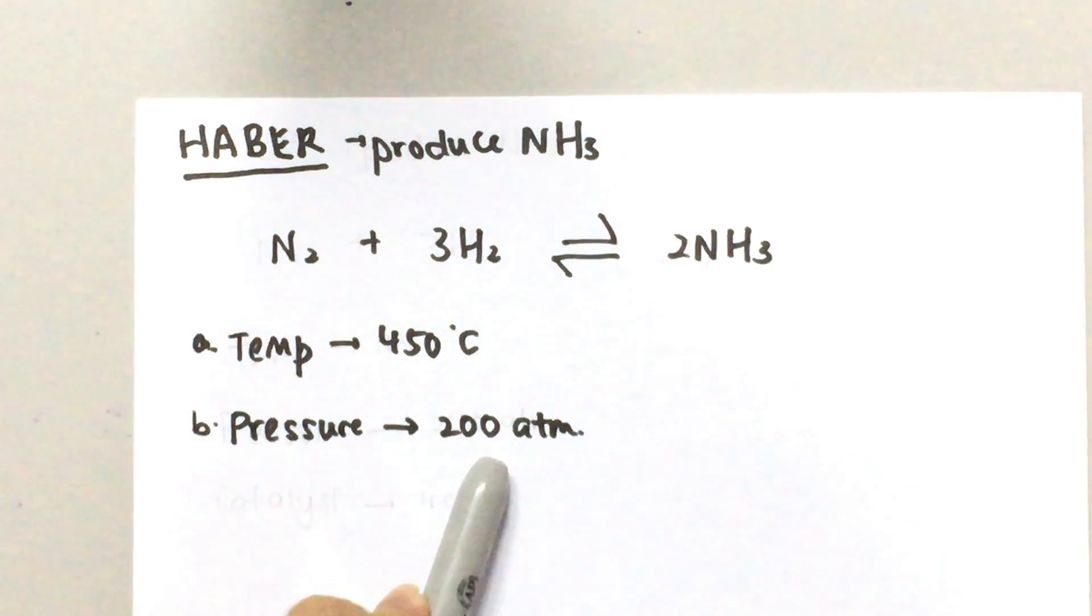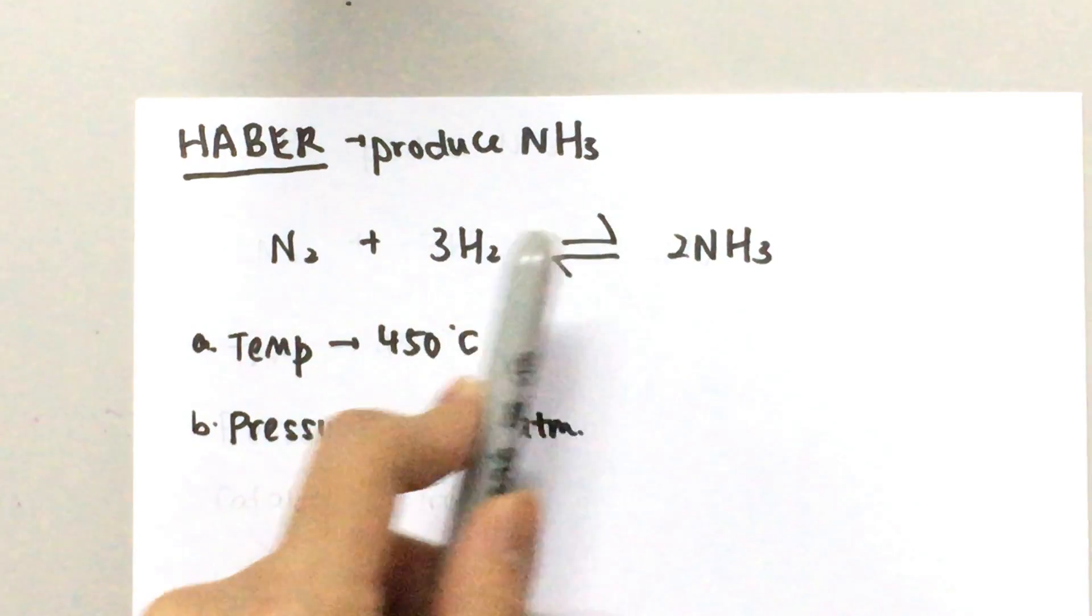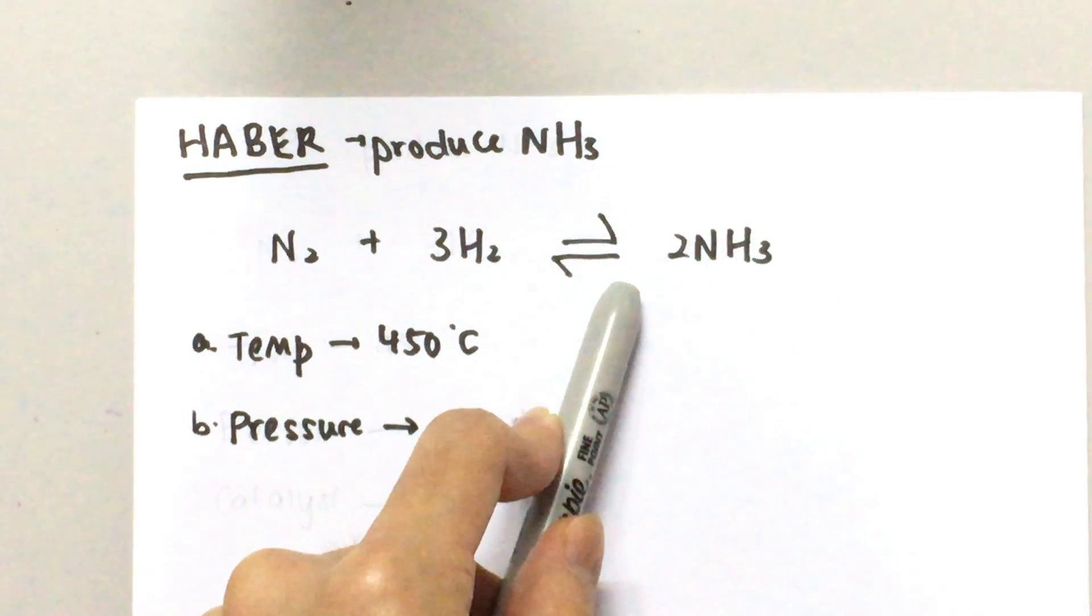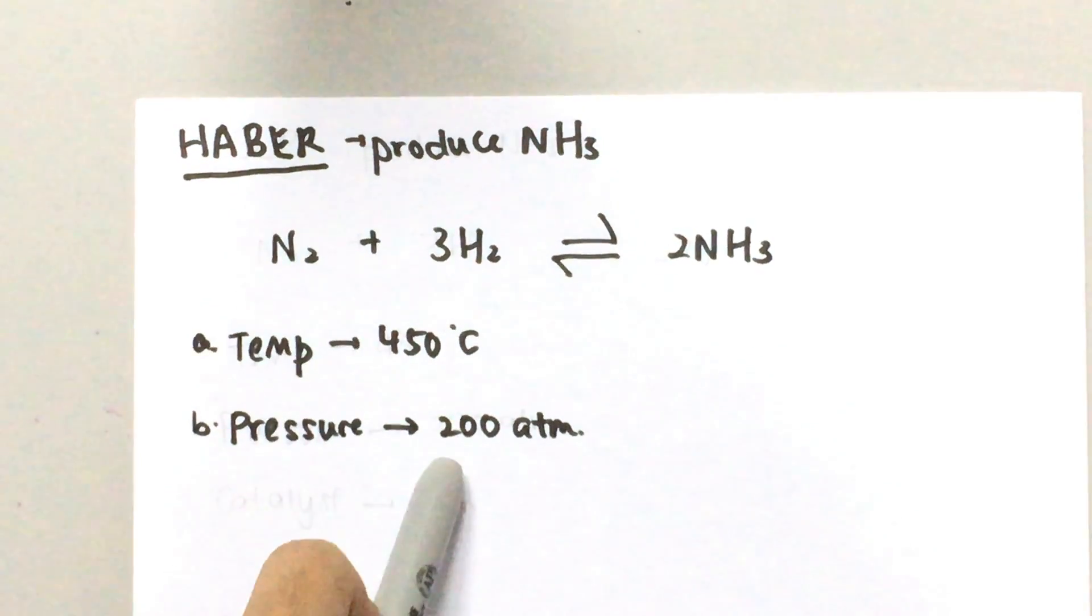So a high pressure is going to push the equilibrium to favor the forward reaction which would increase the yield. Why stop at 200 is because the higher the pressure is the higher the maintenance cost is. So they use 200 atm to balance out the cost and the yield.